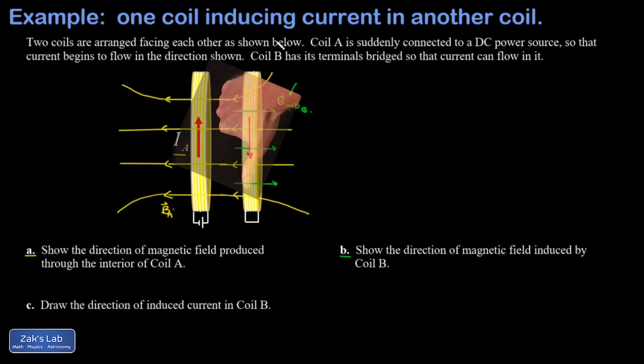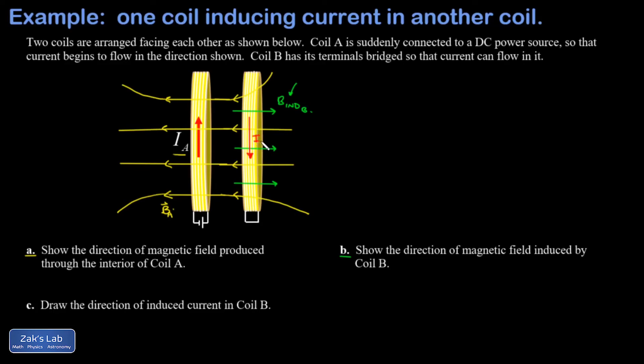The direction of my current is down the near face, up the far face, and it's going to be the opposite of the direction of current running in the original coil.